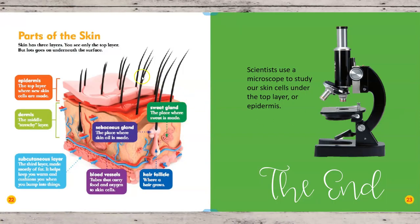This is called a diagram, and the title is Parts of the Skin. The caption says skin has three layers — you see only the top layer, but lots goes on underneath the surface. Look at your arm — you're just seeing one layer of your skin. This little bracket is showing the first layer, or the epidermis. That is the top layer where new skin cells are made.